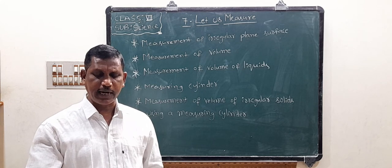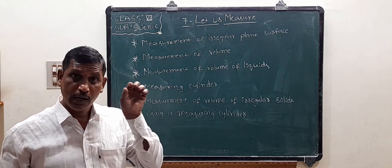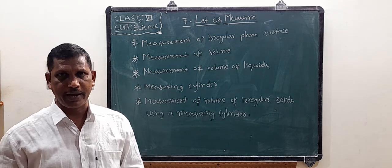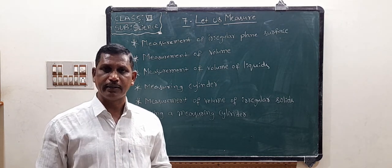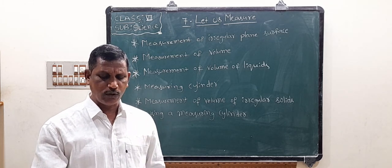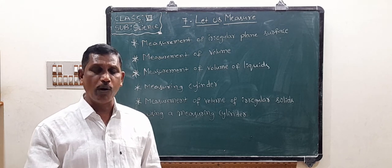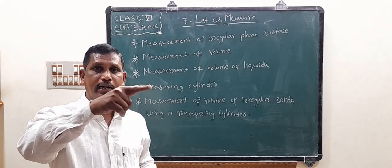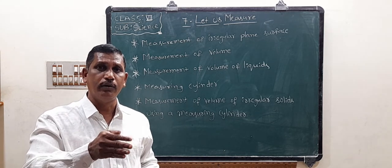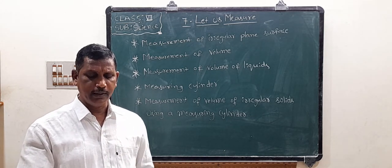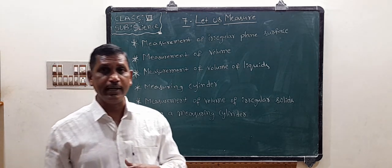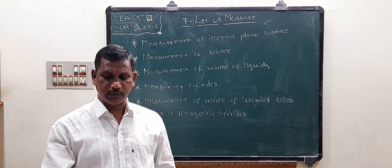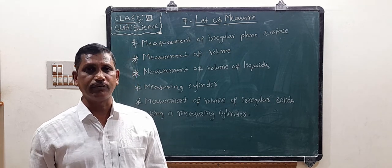If there are n squares inside the boundary of the graph sheet, the area of the leaf becomes n square centimeters. Neglect those squares inside the boundary which are less than half. The squares having less than half inside the boundary of the leaf are neglected. This process will give us the value of the area which is close to the actual area of any given irregular shape.